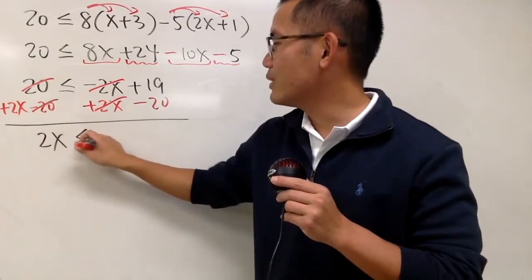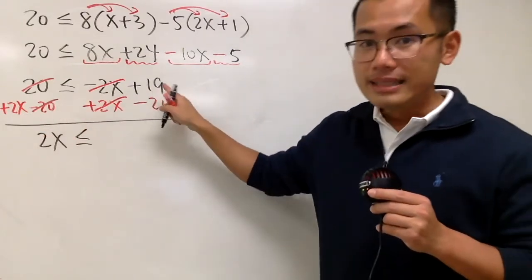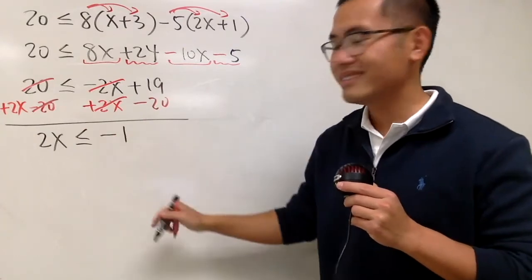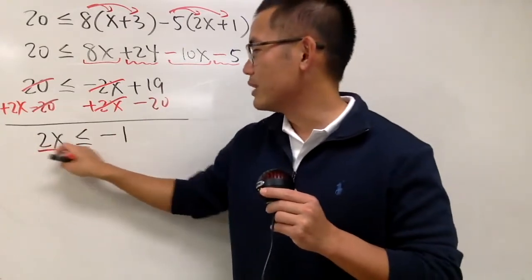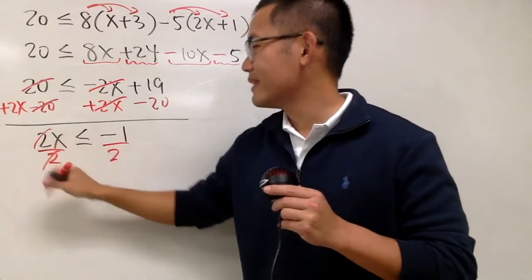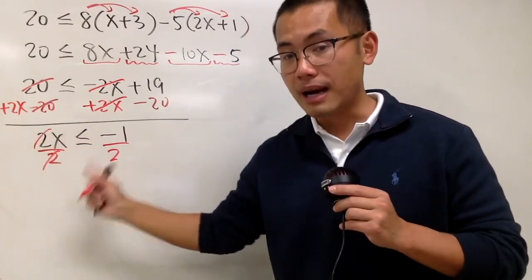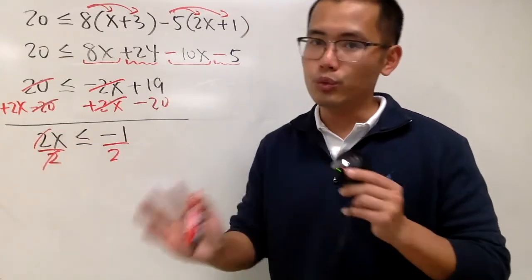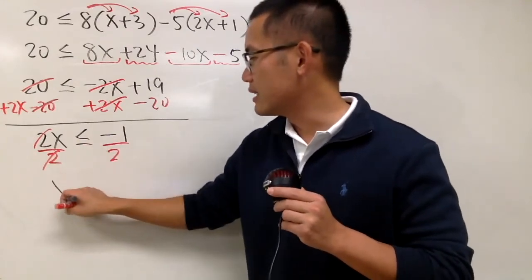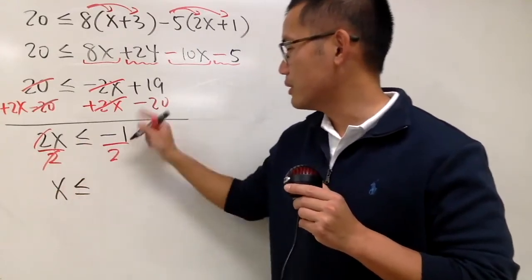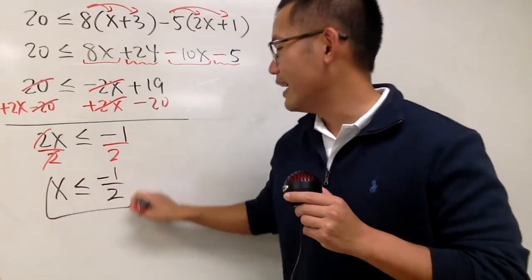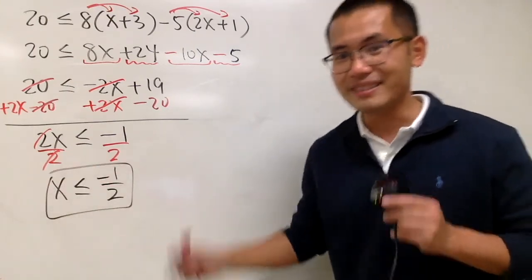Finally, we see 2x is less than or equal to 19 minus 20, which is negative 1. We divide both sides by positive 2. When we divide by positive 2, we do not switch the inequality symbol. So x is less than or equal to negative 1 half. That's it.